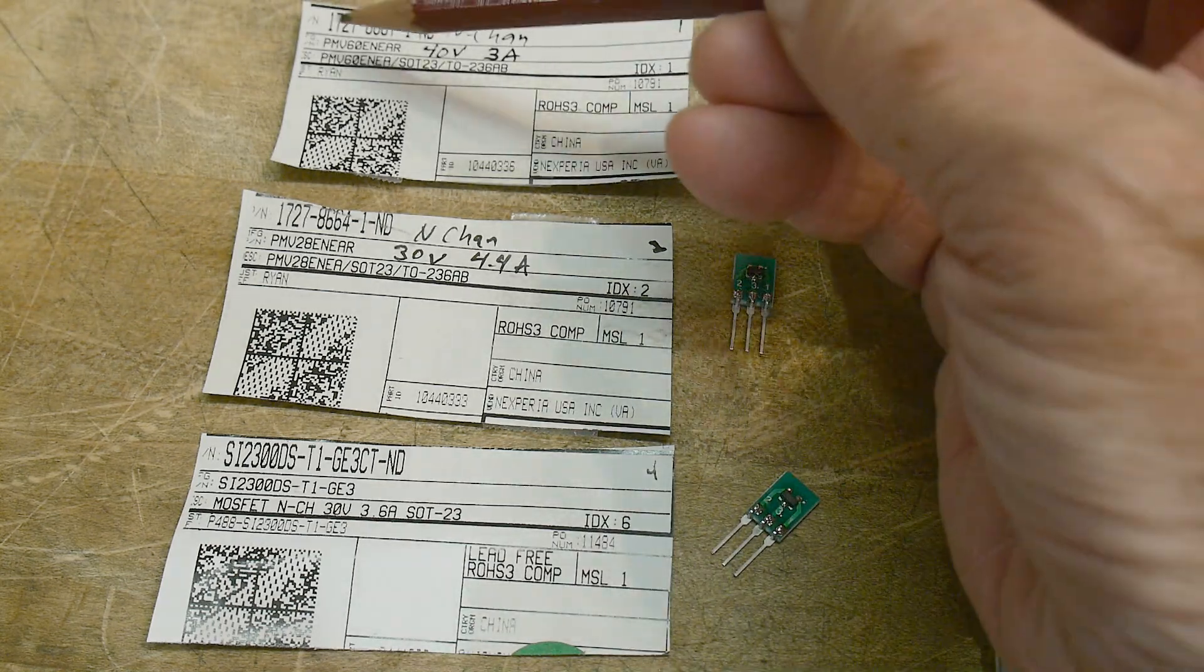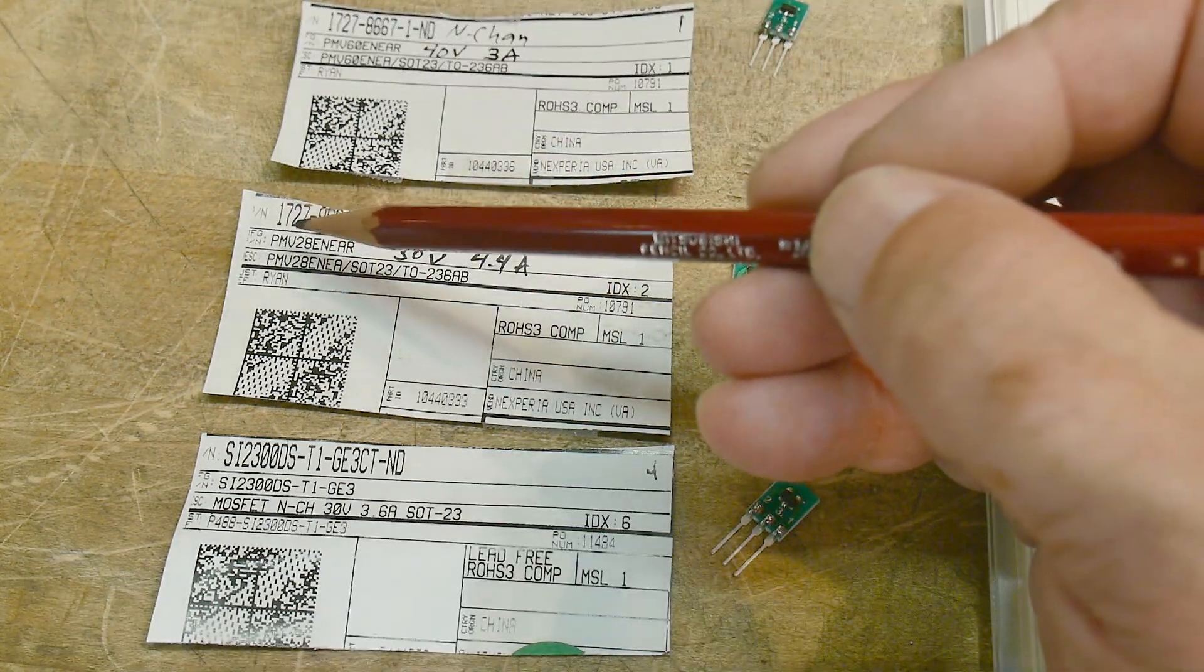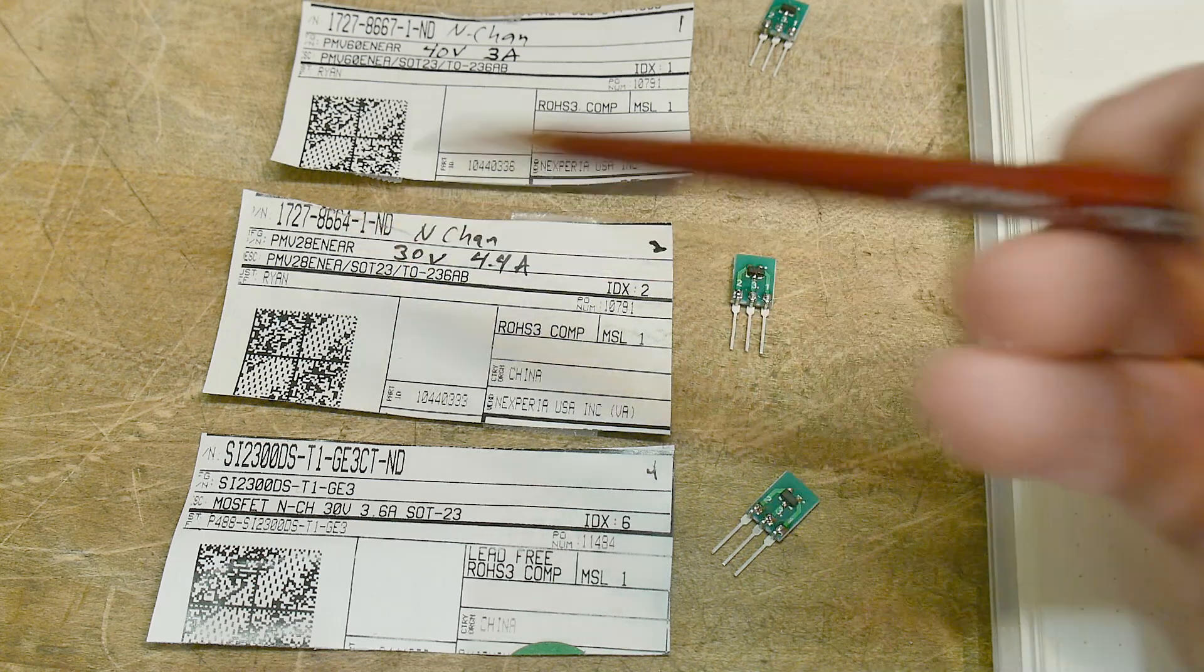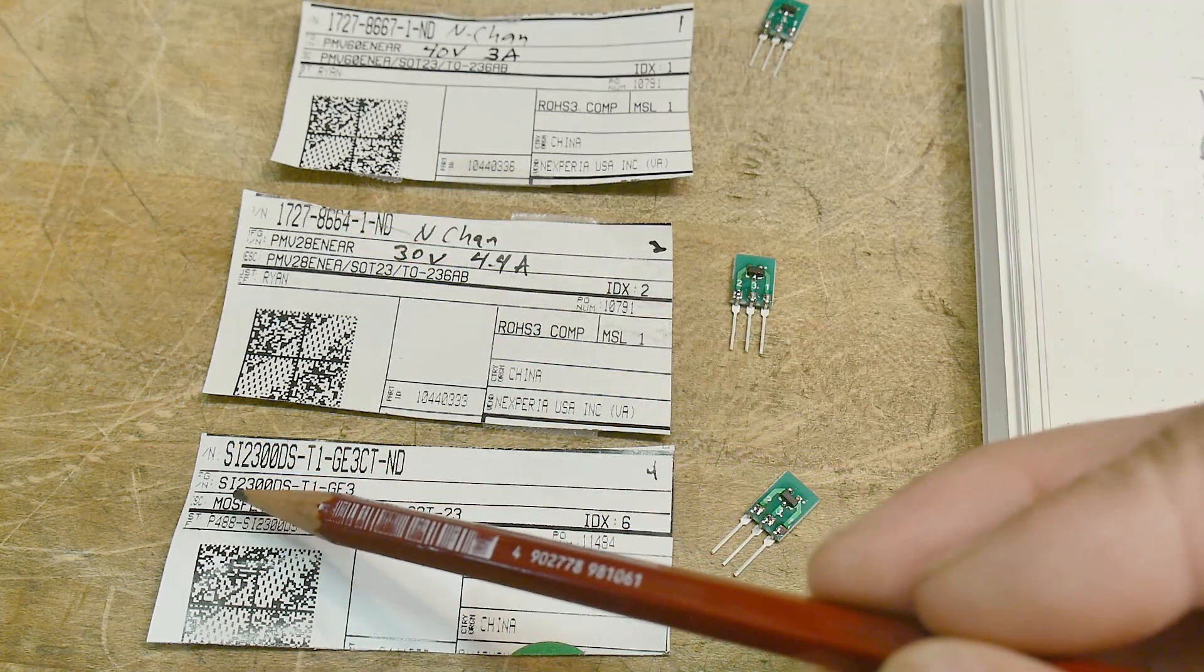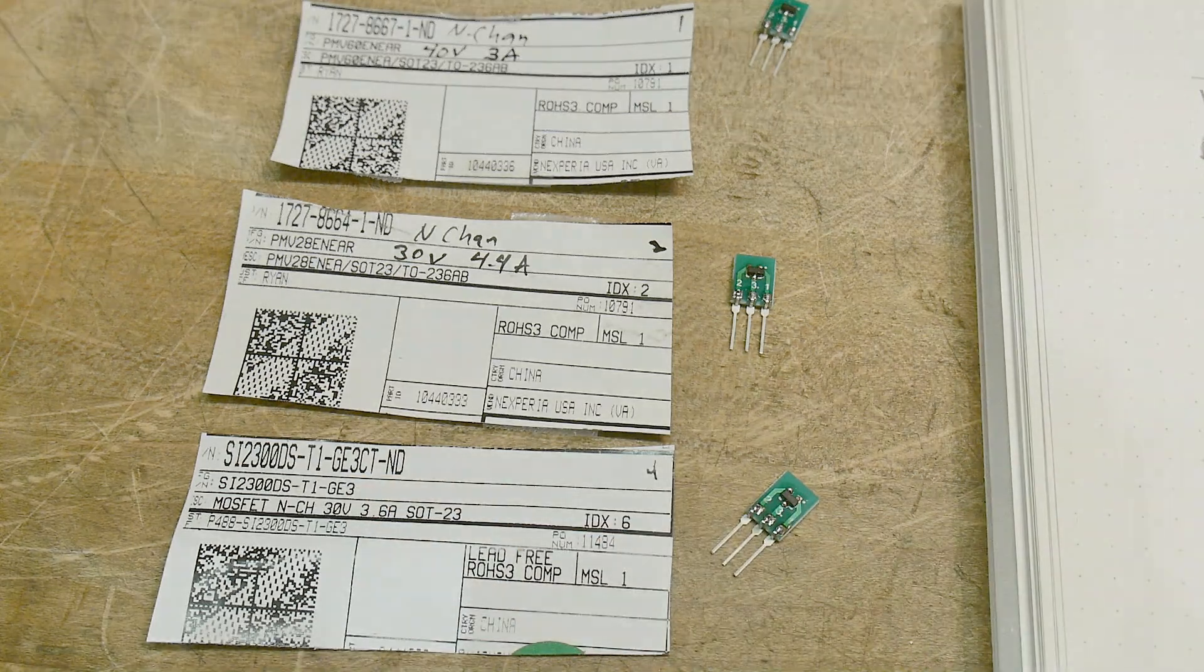It was a PMV60ENEAR and a PMV28ENEAR and a SI2300DST1GE3, all in SOT23 packages.